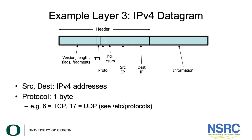Here's an example of layer 3 — the most common example you'll come across: it's the IPv4 datagram. The IPv4 datagram has a header and an information part. The header is 20 bytes and consists of a number of fields, but the most important ones are the source and destination IPv4 addresses. Another field called the protocol says what layer 4 protocol is contained — for example, if that field contains the number 6, it means we're carrying TCP traffic, and if it's 17, it means we're carrying UDP traffic. That describes what kind of data to expect in the information section.